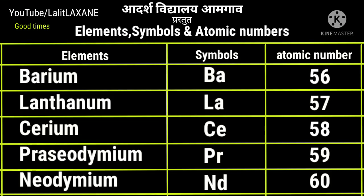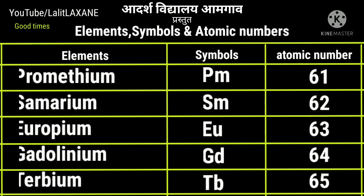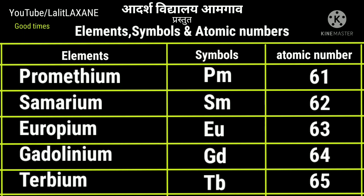Lanthanum La with atomic number 57. Cerium Ce, 58. Praseodymium Pr, 59 and neodymium Nd with atomic number 60. Then in the row with atomic number 61, promethium with symbol Pm. Samarium Sm with 62. Europium Eu, 63.